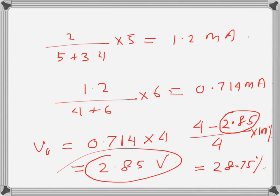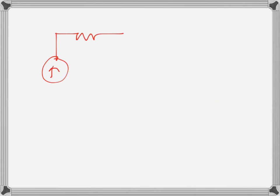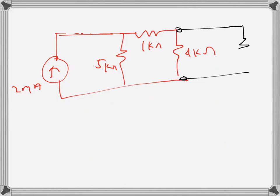Let's do the same thing with another meter that has a higher resistance — 36 kilo ohms. We have the same circuit: 5 kilo ohms, 1 kilo ohm, 4 kilo ohms, and a 2 milliamp source. The voltmeter, now with 36 kilo ohms internal resistance, is connected across the 4 kilo ohm resistor. We will find the new reading and calculate the percentage error to see how accuracy improves with higher internal resistance.